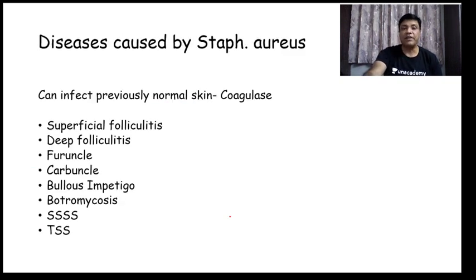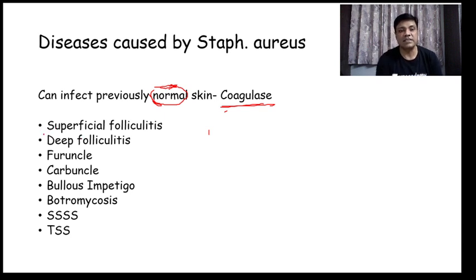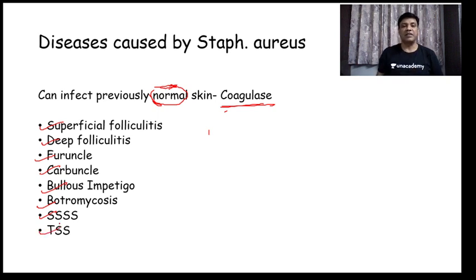Coming to the various diseases caused by Staph aureus: it can infect previously normal skin due to production of coagulase. The diseases caused by Staph aureus are superficial folliculitis, deep folliculitis, furuncle, carbuncle, bullous impetigo, botryomycosis, staphylococcal scalded skin syndrome, and toxic shock syndrome.